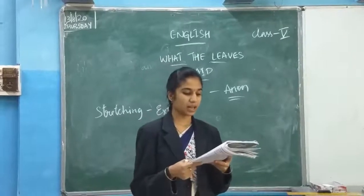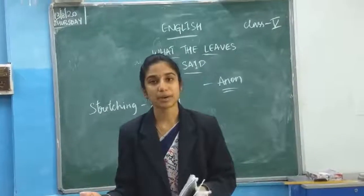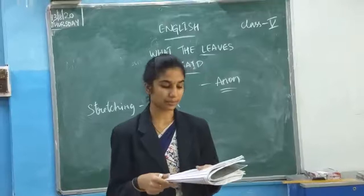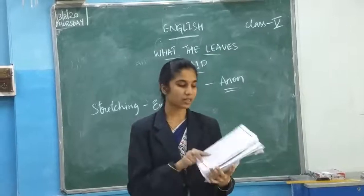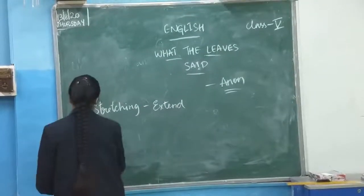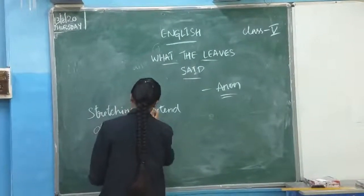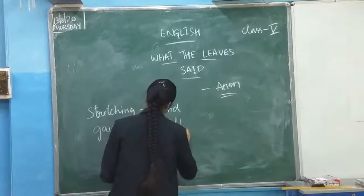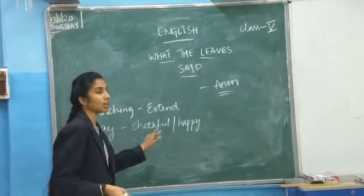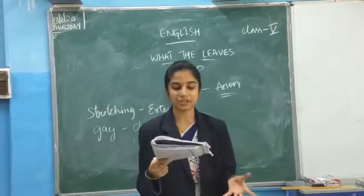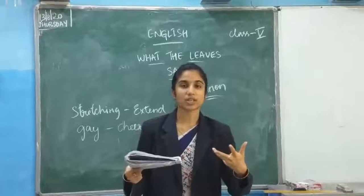The Leaves Said it is Autumn. Autumn means after summer this season will be coming. Aren't we all gay? Gay means cheerful or happy. Aren't we all happy? It is Autumn — the leaves are questioning: aren't we all happy?